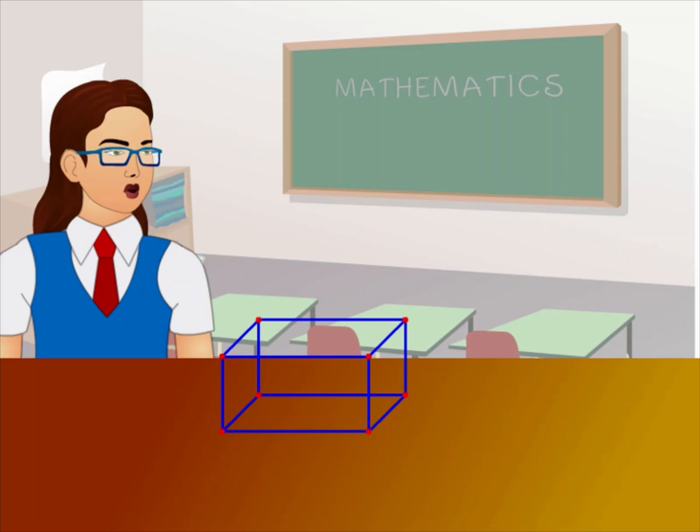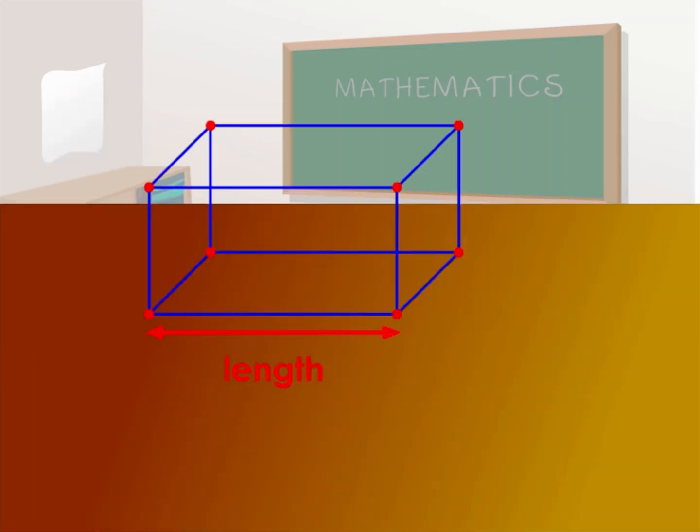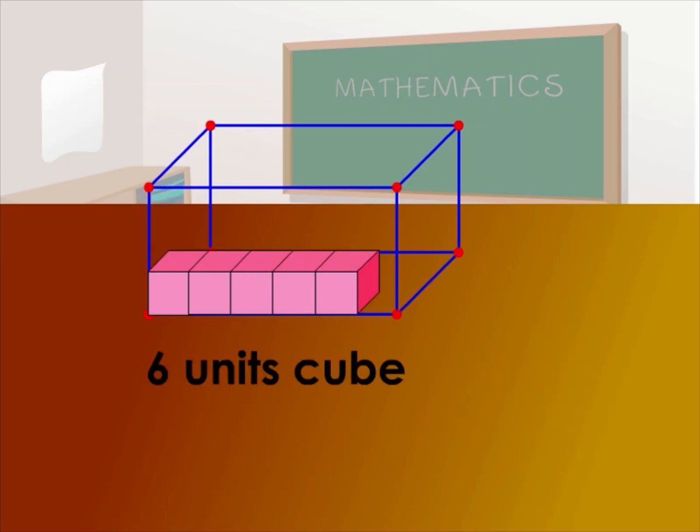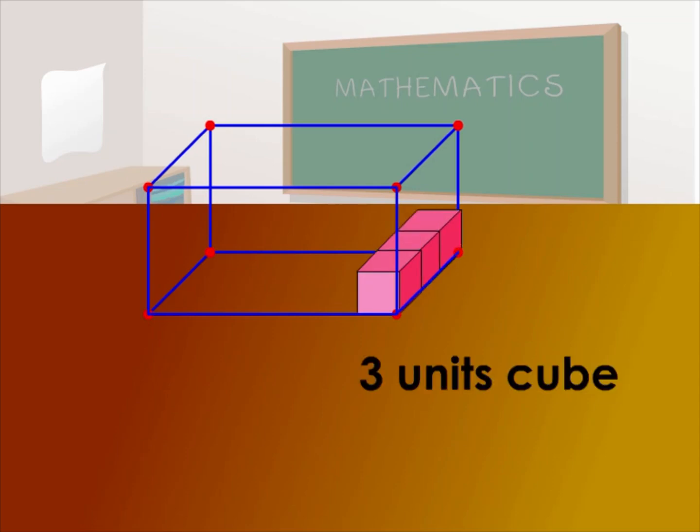I built a cuboid for my presentation. This is the length, the breadth, and this is the height. The dimensions of the cuboid are not equal. Now I will compare this figure with one unit cube. As you can see, the length is 6 unit cubes and the breadth is 3 unit cubes.